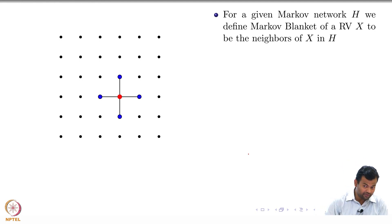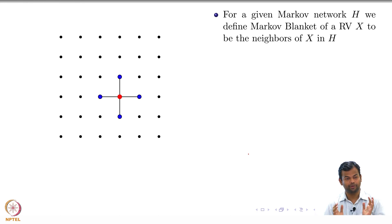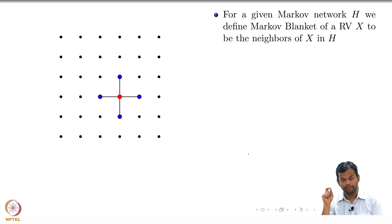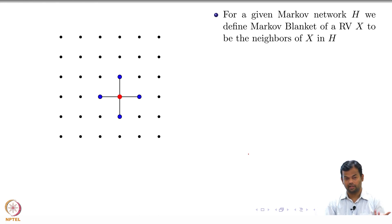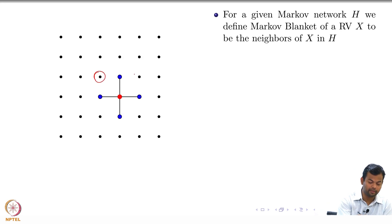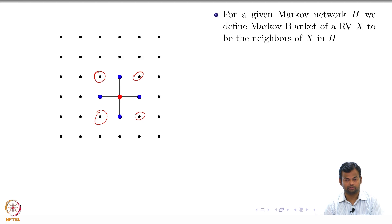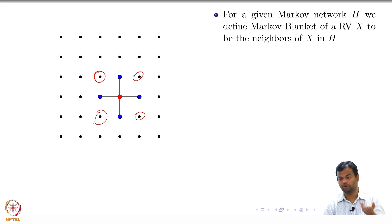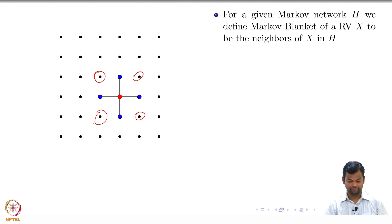Just as we defined parents for a node in a Bayesian network, in a Markov network we define the Markov blanket, which is the collection of all neighbors of a node X. For any random variable X in the network, its Markov blanket consists of all its neighbors. What counts as a neighbor is a modeling choice — for example, with image pixels you might include diagonal neighbors, or only horizontal and vertical neighbors depending on the application.